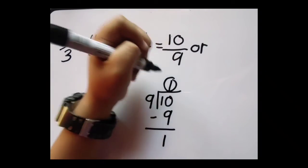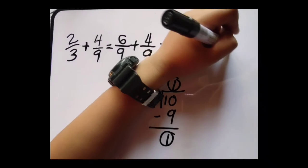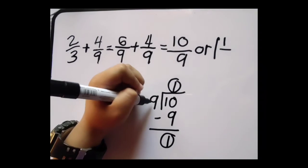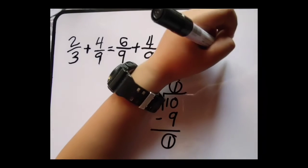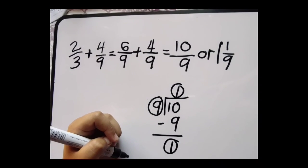Yung 1 magiging whole number natin. Yung remainder magiging numerator. At yung 9 magiging denominator. Kaya ang sagot natin ay 1 and 1/9.